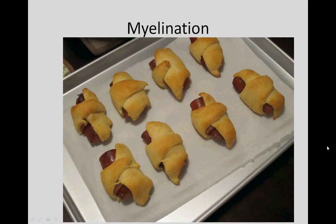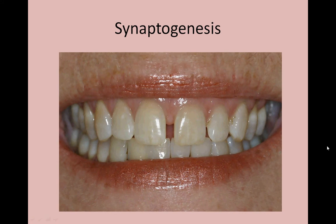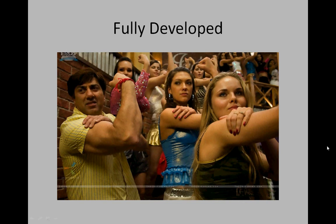The fourth step is myelination. Glial cells within the brain produce myelin sheaths that encase the axons, allowing for rapid transmission of information. In humans, myelin forms first in the spinal cord before forming in the brain. Myelination begins during the prenatal period and continues into adulthood. The fifth step is synaptogenesis — the formation of synapses, the gaps between the presynaptic terminal and the postsynaptic terminal. This last step in neural development continues throughout life, resulting in a fully developed neuron.